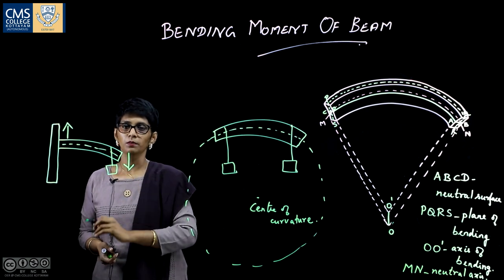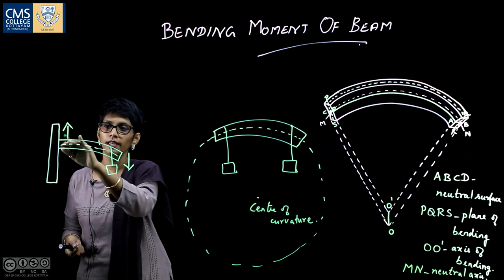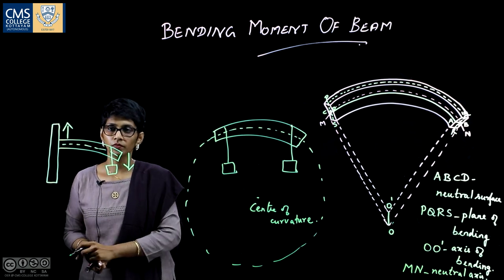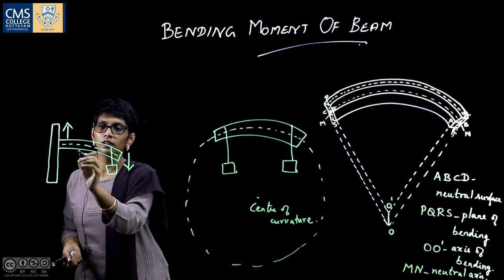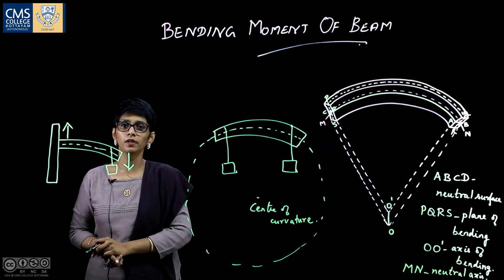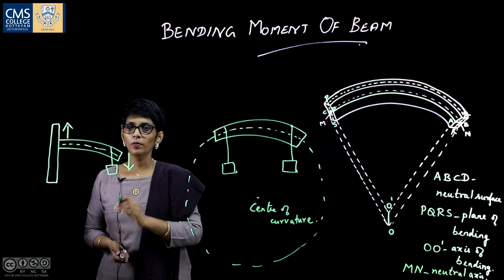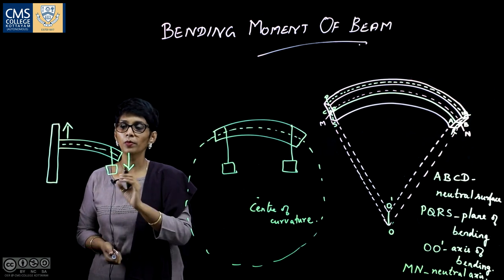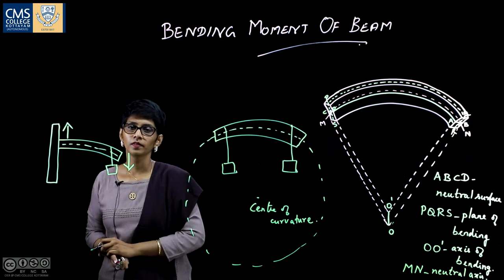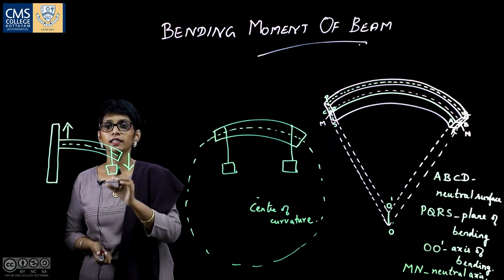When the beam bends, above the neutral layer there is a tensile force causing lengthening, and below comes a compressive force. These two forces are equal and opposite and form a couple called the balancing couple. The moment of this balancing couple is called the moment of resistance to bending. At equilibrium, the bending moment and the moment of resistance to bending are equal and opposite.